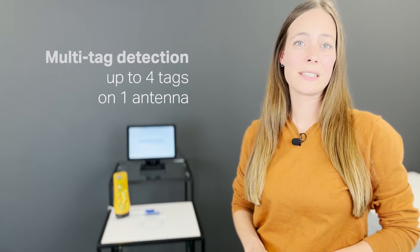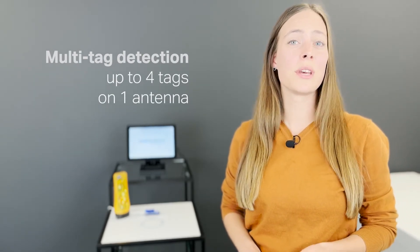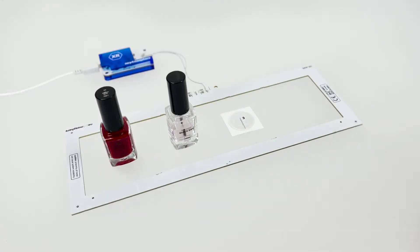An RFID sensor can read up to four tags simultaneously. We call this multi-tag detection, and this is a feature often used when working with small size merchandise, such as nail polish or perfume bottles, that together fit on a single larger sized RFID antenna.